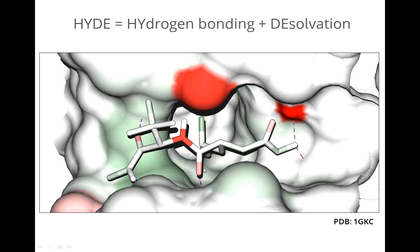The crucial difference of HYDE versus other scoring methods is that it not only sums up favorable interactions but also penalizes interactions that are not present. An oxygen atom facing a carbonyl without forming a hydrogen bond incurs a penalty because the desolvation energy is not overcompensated. On the other hand, a methyl group sitting comfortably in a hydrophobic pocket due to the hydrophobic effect is colored green, contributing favorably to the overall score. This is what we mean by visual interaction — with one glance you can see where improvement on the molecule is possible.